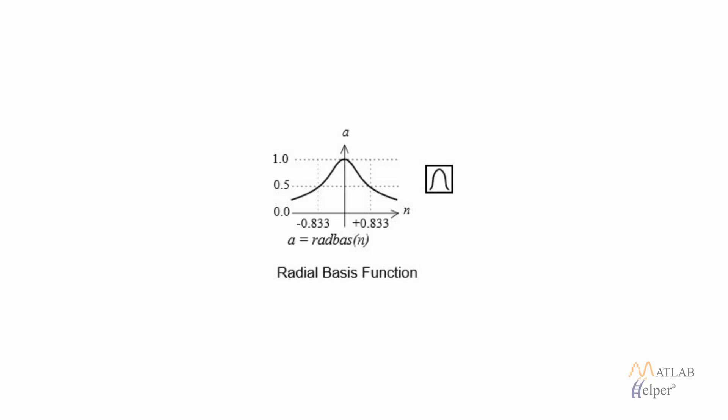As you can see, if the input, that is the Euclidean distance, is very large, meaning the Gaussian neuron that we specified and the input vector are very far away, then the output from the radial basis function will be near zero. If they are very near to each other, then it will be equal to one.